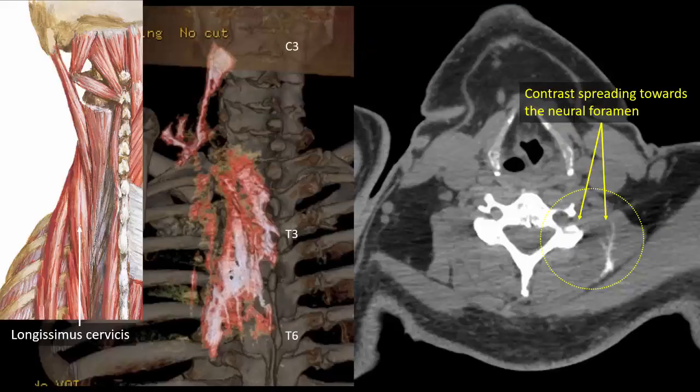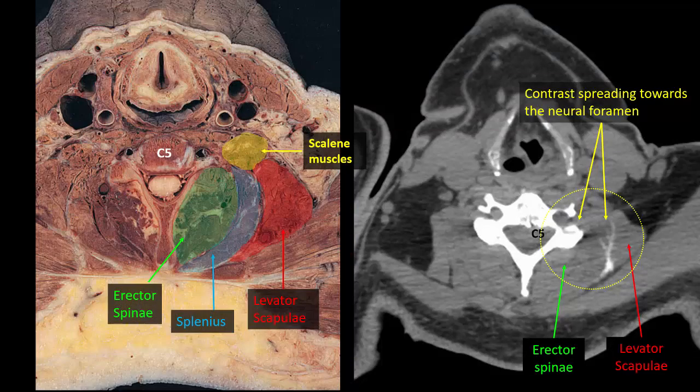We're still not entirely sure how it works, but we believe there's a component of spread to the cervical nerve roots, as suggested by contrast distribution on radiological imaging in patients, as shown here. We can see that the erector spinae muscle and the intermuscular planes extend up into the neck and communicate with the planes adjacent to the scalene muscles and the cervical neural foramina. Local anesthetic spread into the shoulder girdle muscles around T1 and T2 may also produce a local effect on nerve endings in the shoulder girdle muscles.